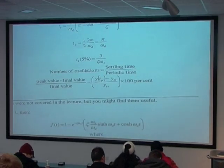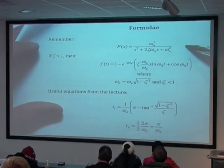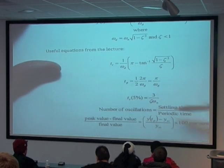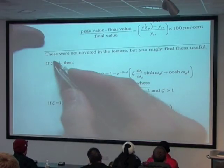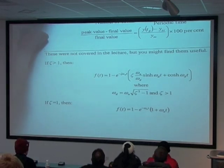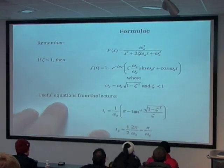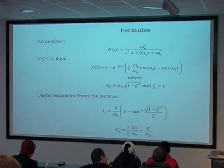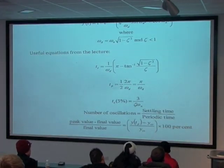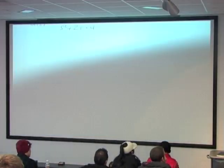On the back of the tutorial sheet there's a whole bunch of formulae: the transfer function, the time response equation, the equation for omega_d, and all the equations from the lecture to get the various performance criteria. Right at the bottom it covers what happens when zeta is greater than one — which we haven't talked about in the lecture, but there is one question on the sheet where zeta is greater than one. When zeta is greater than one, the rise time is slightly different, there is no periodic time, the peak is the final value — no overshoot — and because there are no oscillations, a whole bunch of these criteria don't apply.